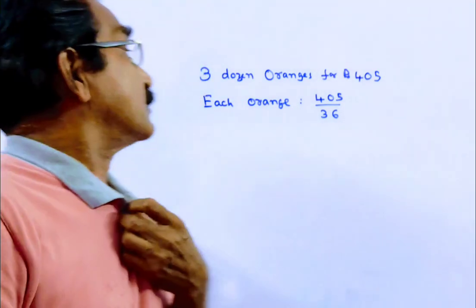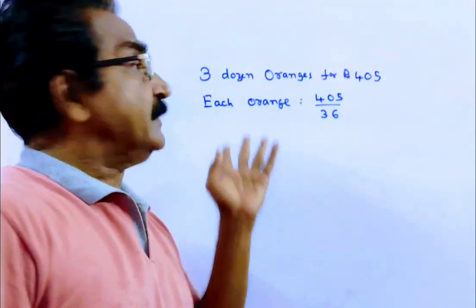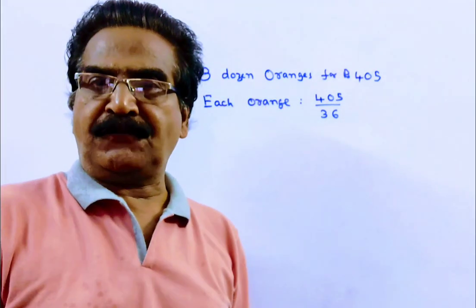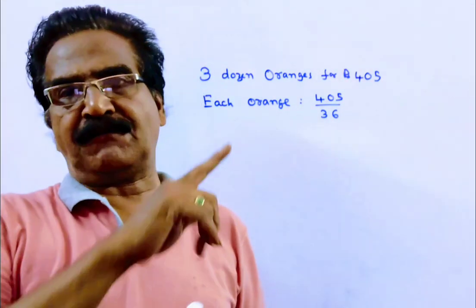Friends, the problem is given in the description box. See friends, by selling 3 dozen oranges for Rs. 405, a man suffers a loss of 25%.